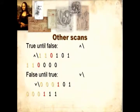Other scans. Well, we have and scan, which keeps all the ones up until the first zero, which is basically the same, true until false. And or scan is the reverse, is false until true. So we'll keep all the zeros until we hit the first one.